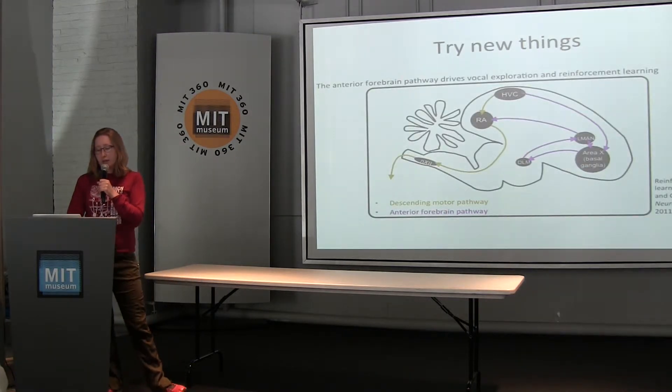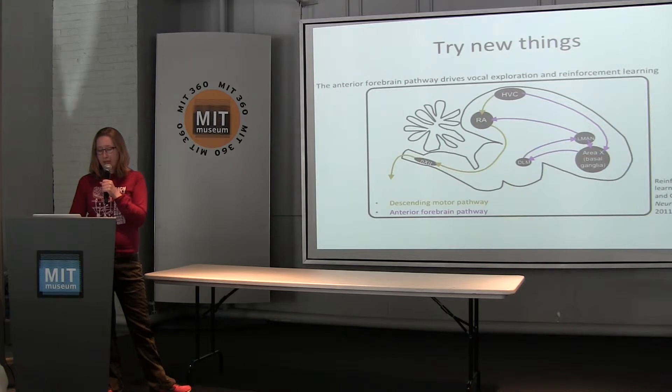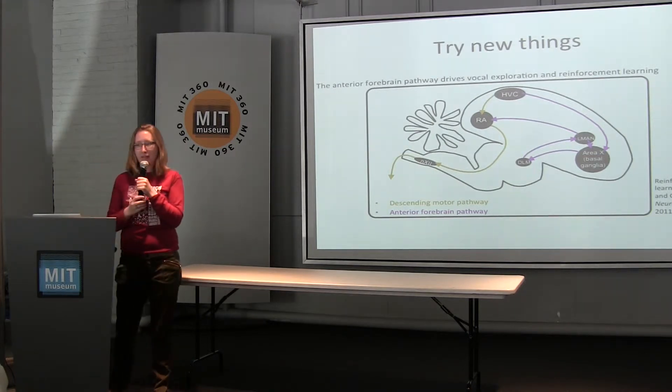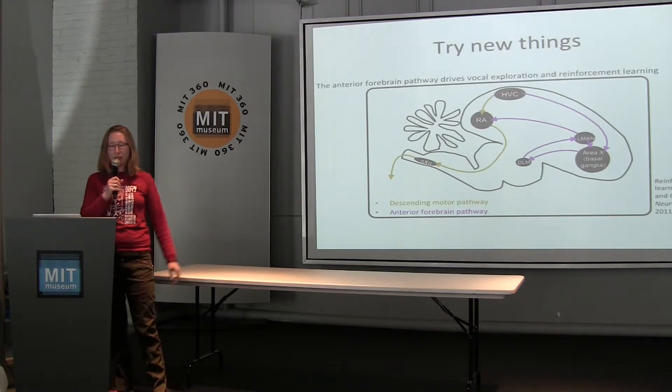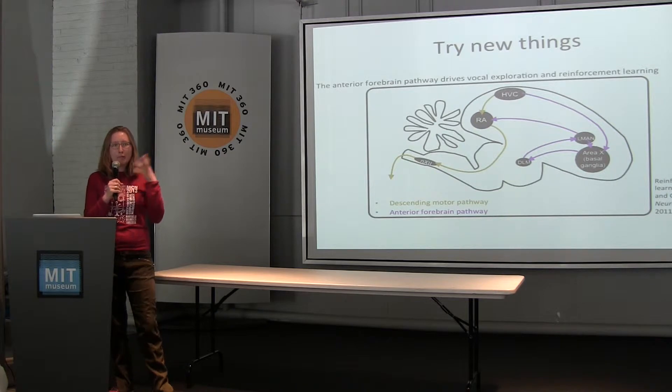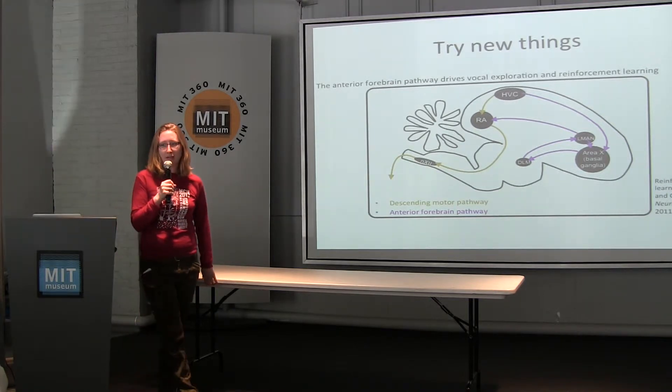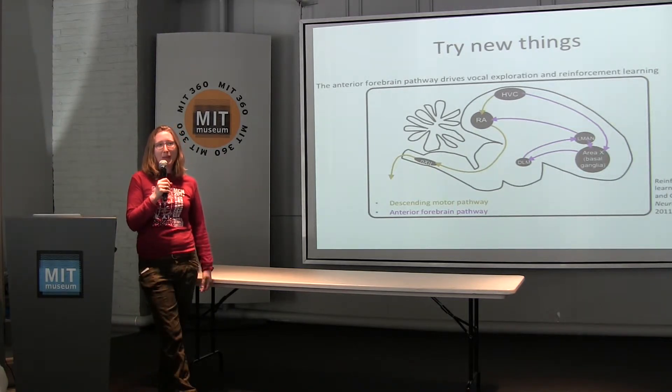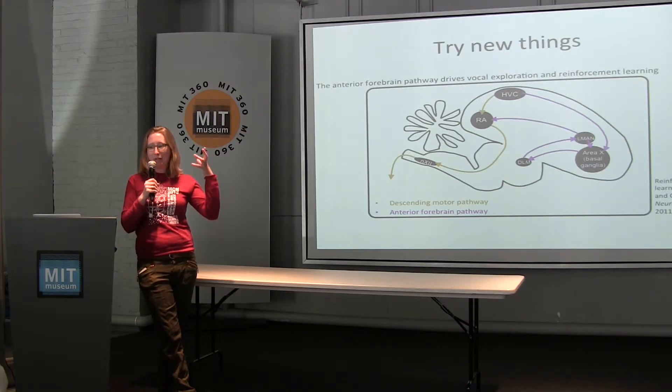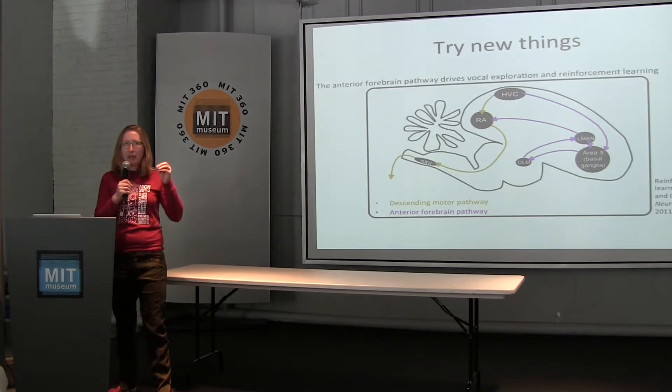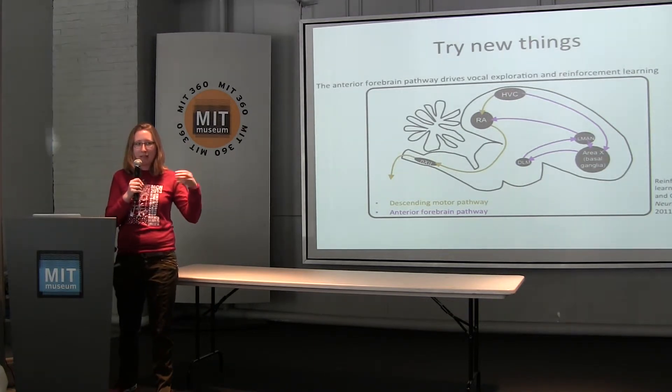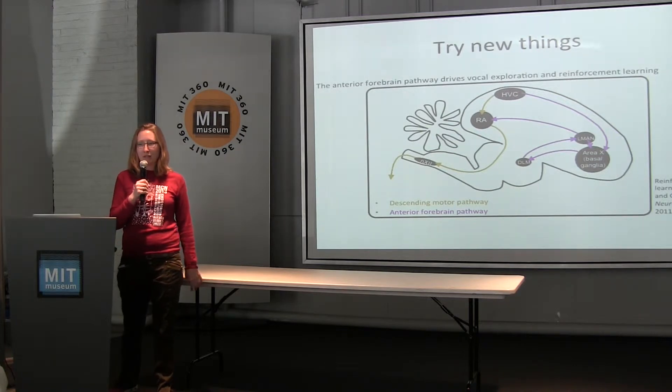The other important thing to do is to try new things. So it turns out there's a circuit in the brain called the anterior forebrain pathway, which inserts random new things to try into his song. So when he's a baby, this is all that's happening. You've heard that random song, that's all that's happening. But even when he's an adult, when he's practicing, he tries different variations and gets different results.